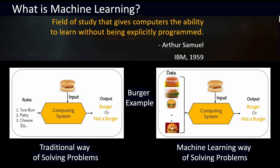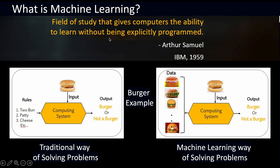Now let us look at a more formal definition of machine learning. Arthur Samuel, an American pioneer in computer gaming and artificial intelligence, was the first to popularize the term machine learning in 1959. He defined it as a field of study that gives computers the ability to learn without being explicitly programmed — that is, computers learn automatically without us explicitly telling them.